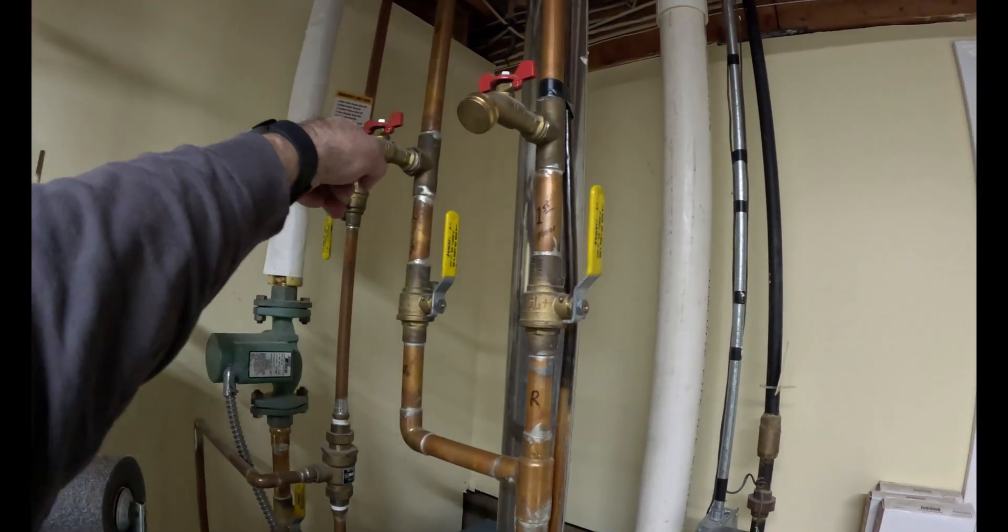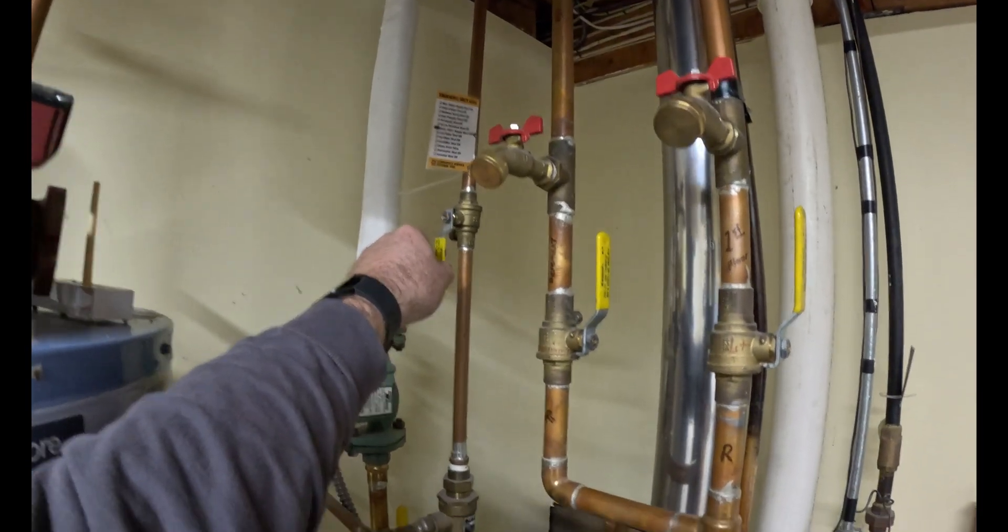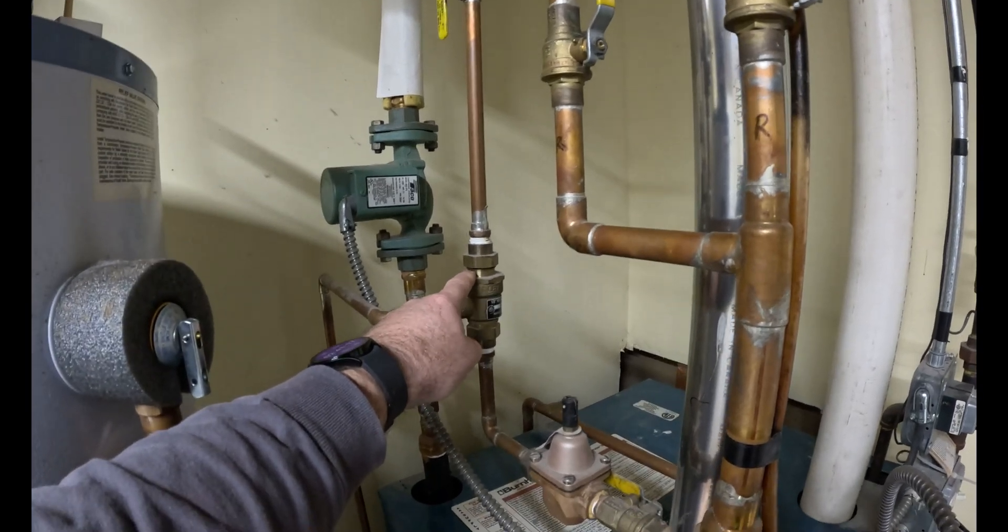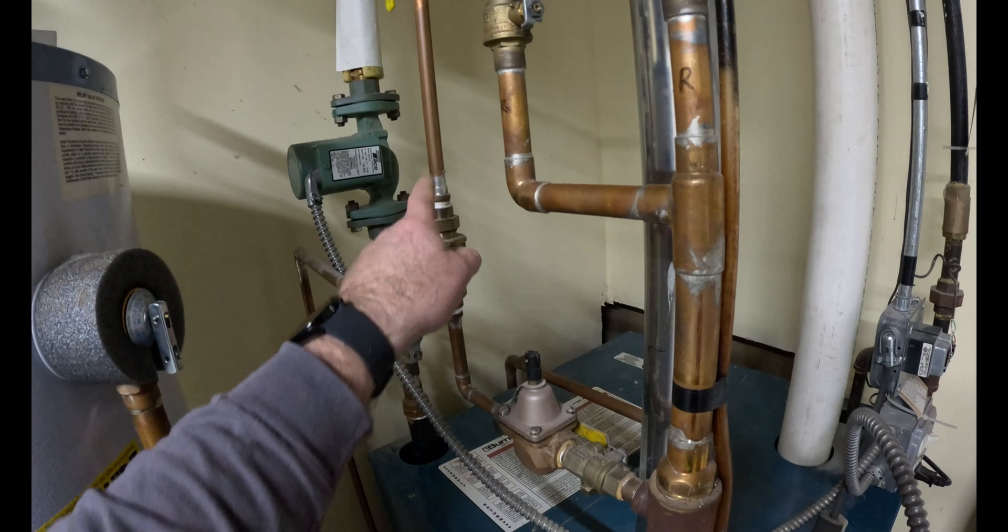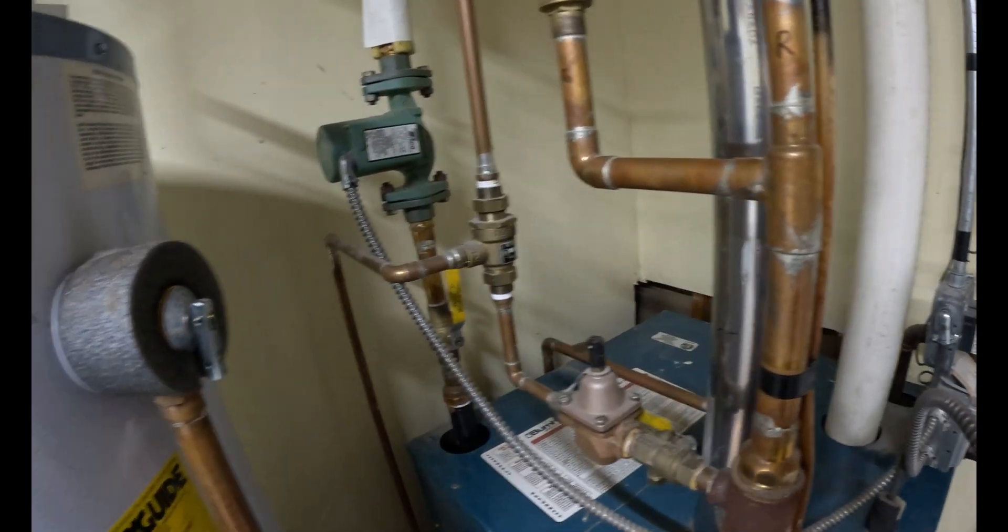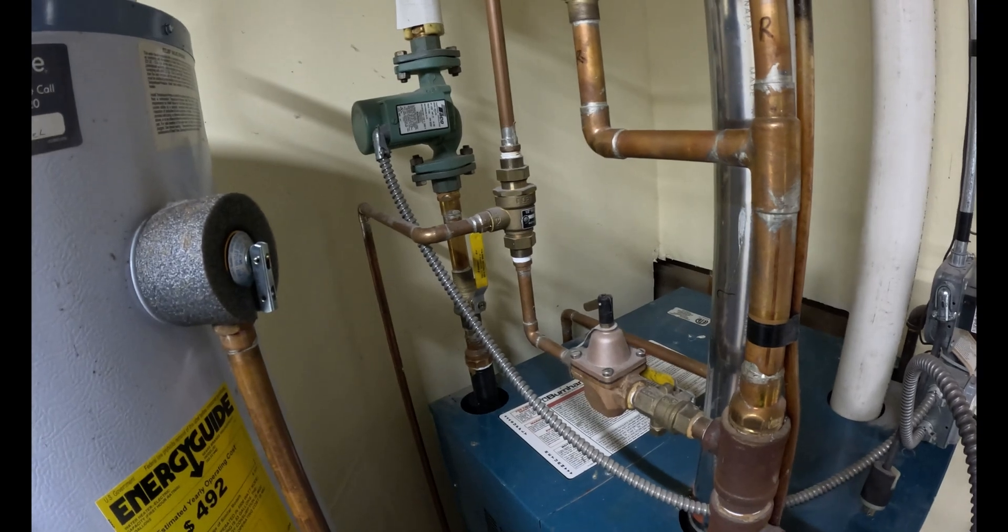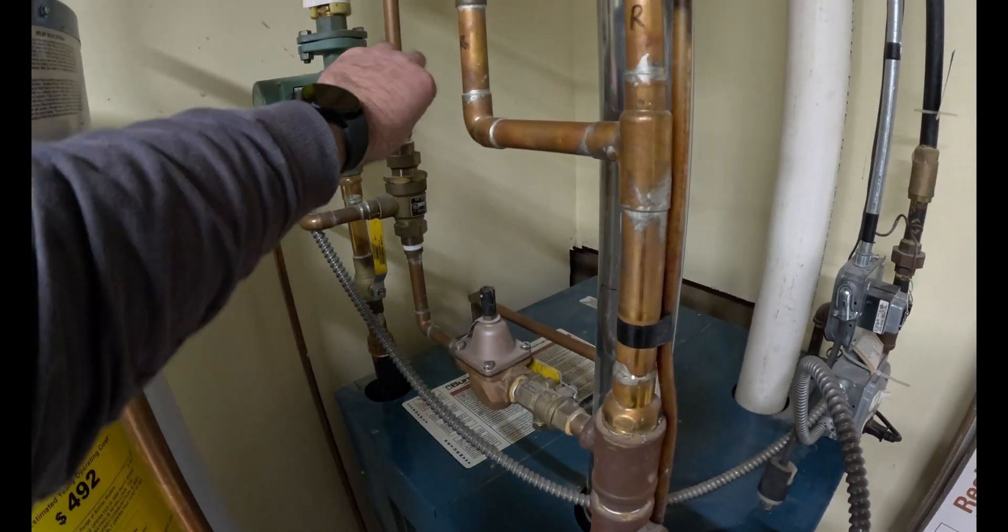This here is your water feed into the boiler, half inch copper into our backflow preventer, which keeps the boiler water separate from the house water. So if there was ever a fire on the street or some major plumbing done, this keeps the water inside the boiler and this keeps the house water inside the house water, keeps everything separate.